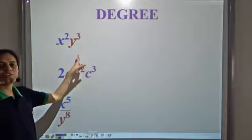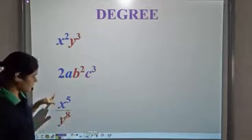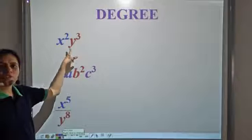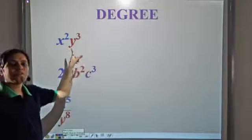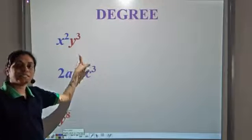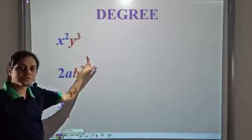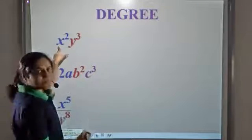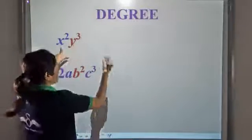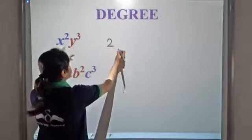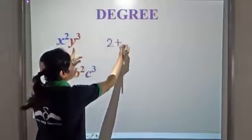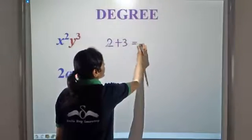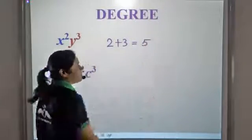Now let us calculate the degree of all these terms. What is the degree of x square y cube? We have just learned that the degree is the sum of the powers of variables. So variables here are x and y. Power of x is 2. Power of y is 3. So the degree of this term is 5.